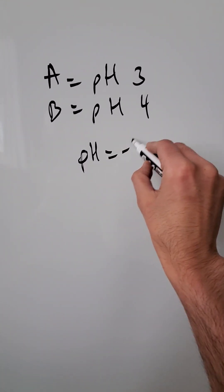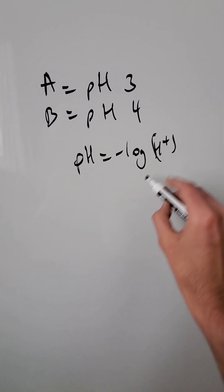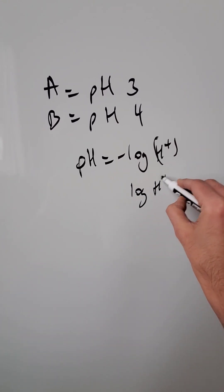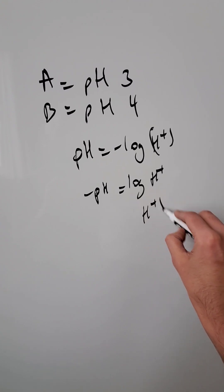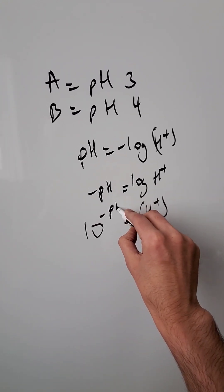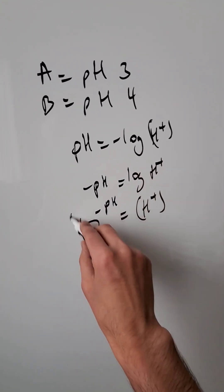pH is equal to negative log H plus, your hydrogen ions. Log H plus is equal to minus pH - I've pushed the minus on the other side. Your hydrogen ion concentration is equal to 10 to the power of minus pH because these logs are always base 10.